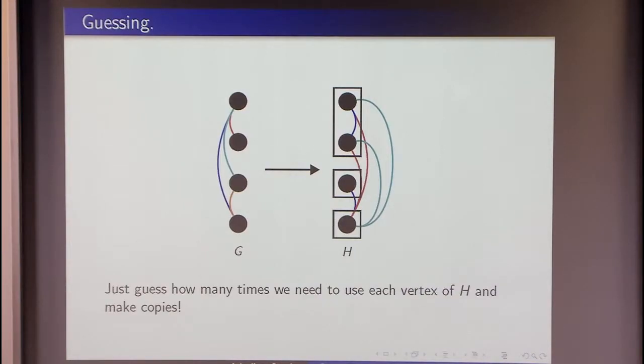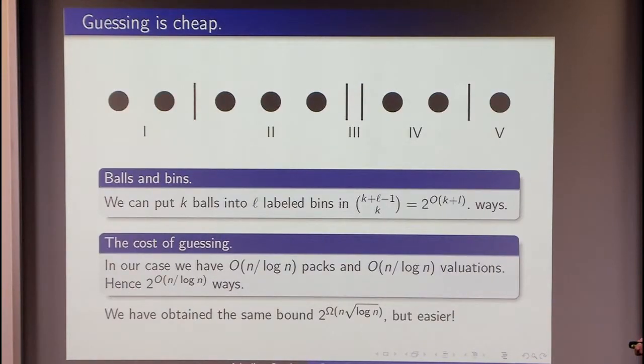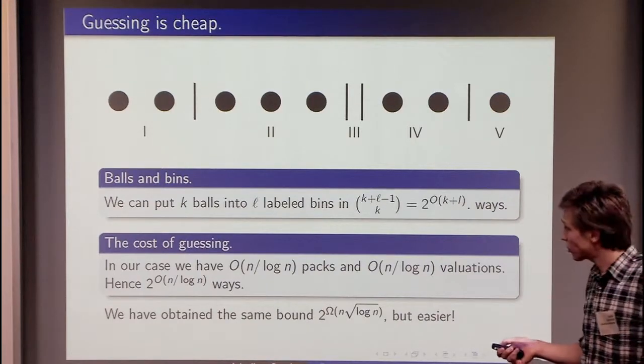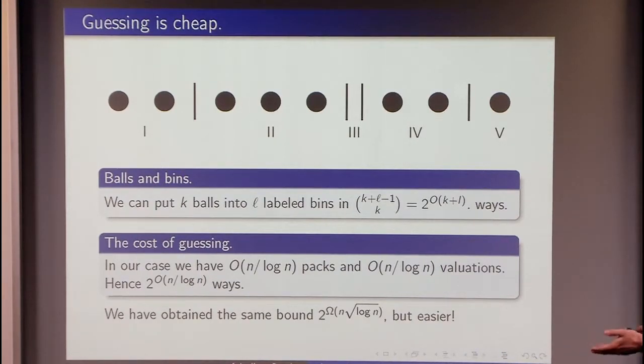Maybe it is sufficient to iterate through all the possibilities of the number of times, how many times we are using each vertex, and just create another instance for each such a possibility. What is the number of those possibilities? It is single exponential because it is a problem of balls and bins. We have K balls. Those balls are the vertices of the graph G. And we have L labeled bins. They are different. They are the vertices of the graph H.